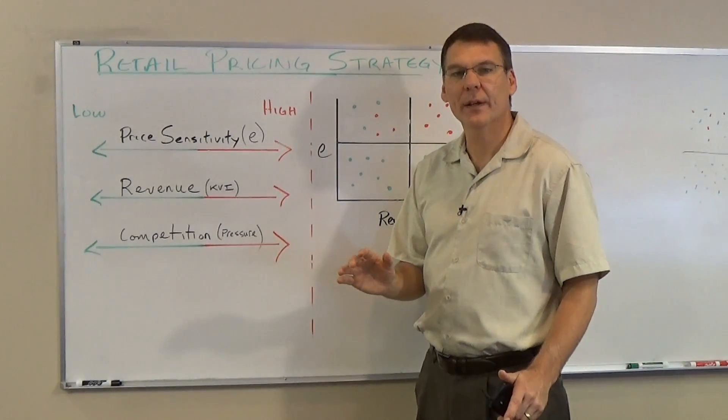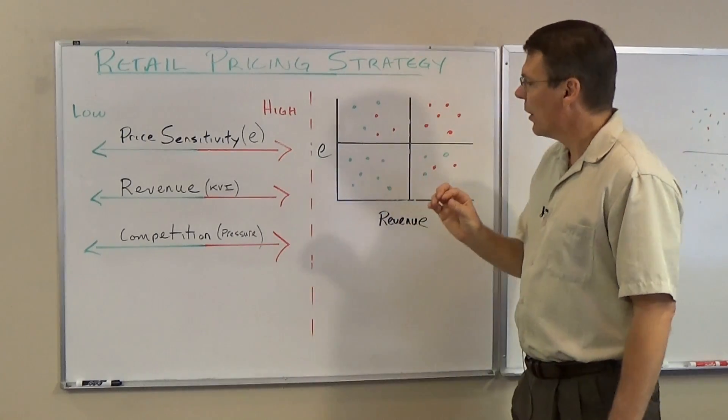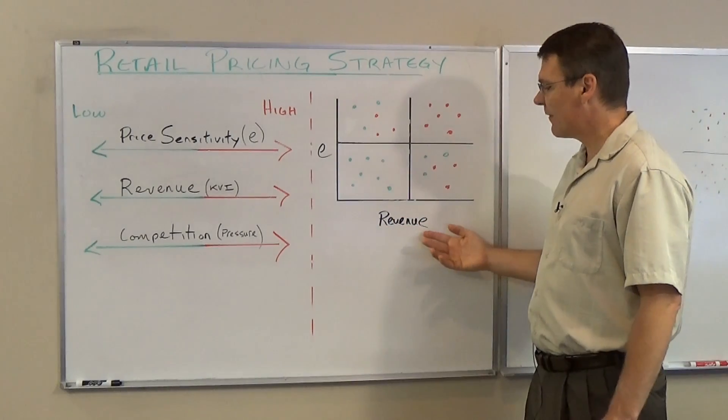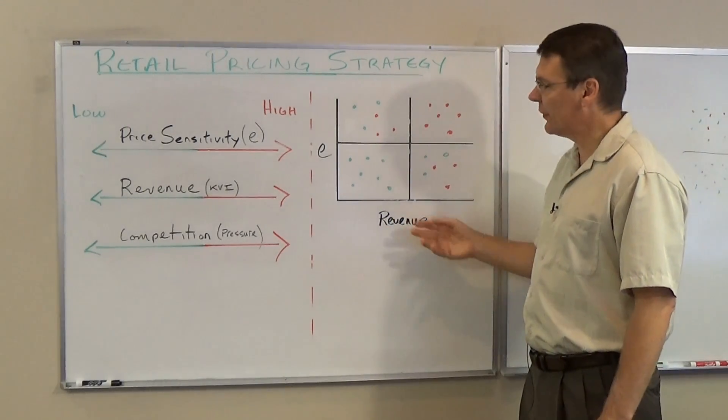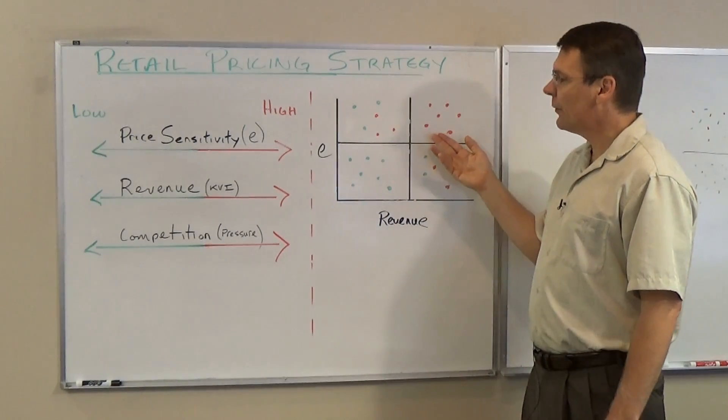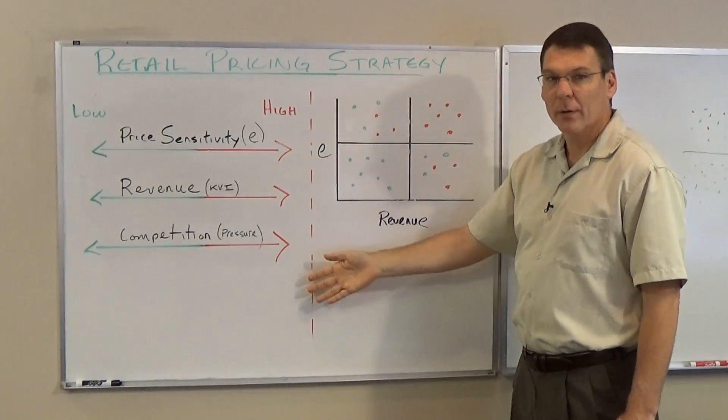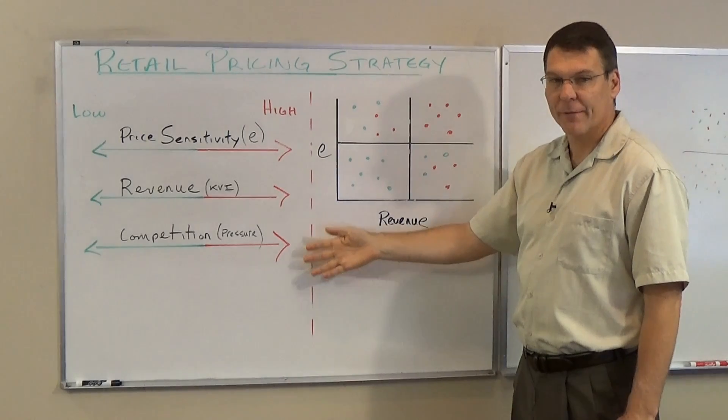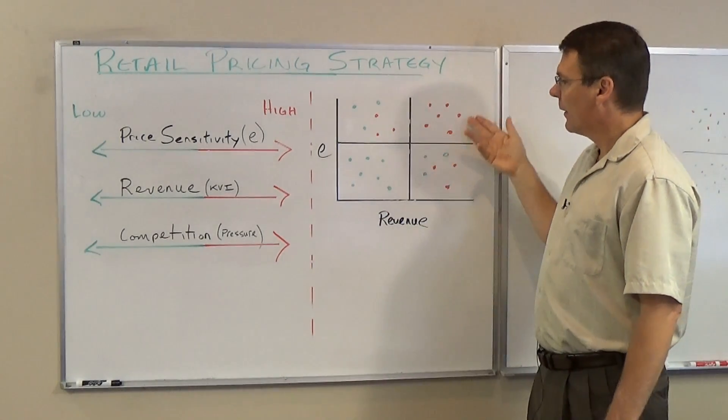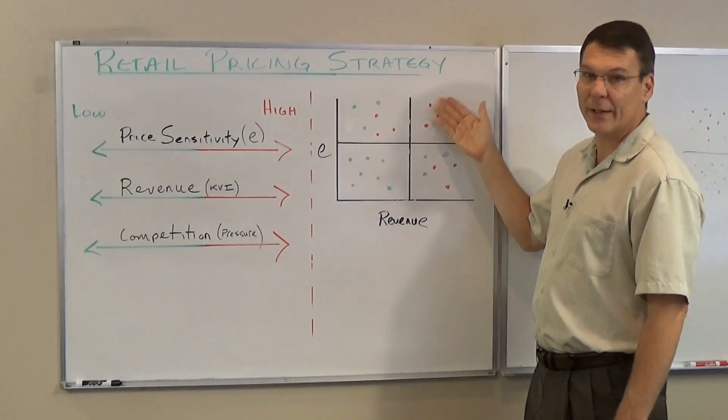Once the clustering is complete, we can display this information on a graph where revenue is the x-axis, price elasticity is the y, and the items that score high generally, that fall into the higher cluster, are shown here in red. This upper quadrant is where you would not increase price.